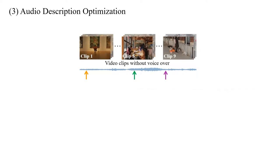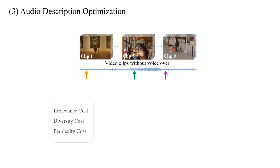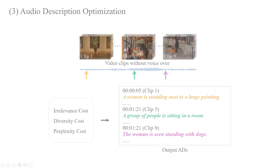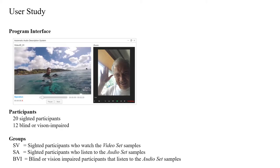To yield accurate and fluent descriptions, a description optimization module selects from multiple generated results to produce the output, which is then input to a text-to-speech engine for final rendering. We implemented a program to perform evaluations.